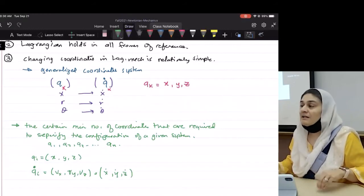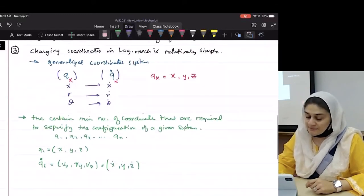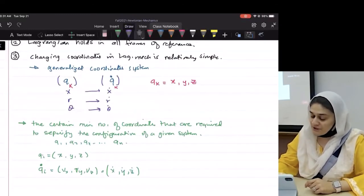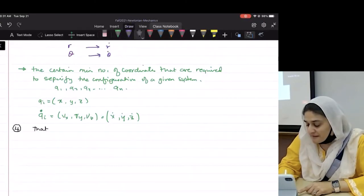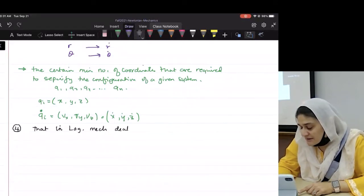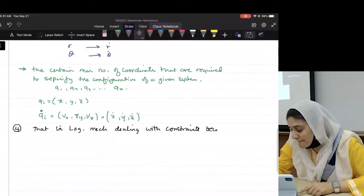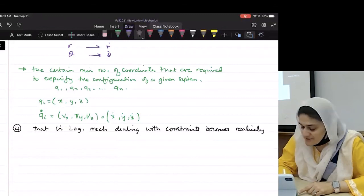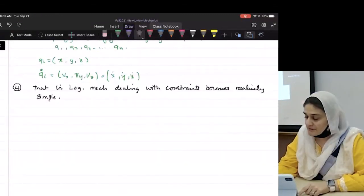So instead of using V's, now we're going to start using these dots. The fourth advantage of using Lagrangian mechanics in Lagrangian mechanics, dealing with constraints becomes relatively simple.